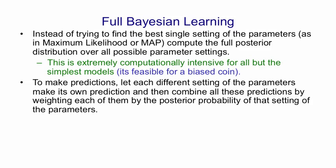After we've computed the posterior distribution across all possible settings of the parameters, we can then make predictions by letting each different setting of the parameters make its own prediction, and then averaging all those predictions together, weighting by their posterior probability. This is also very computationally intensive.